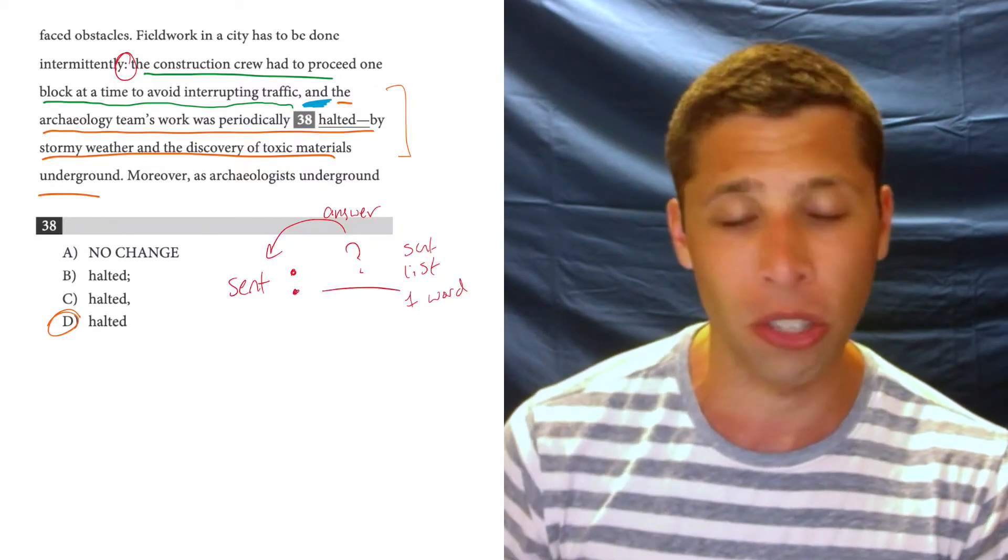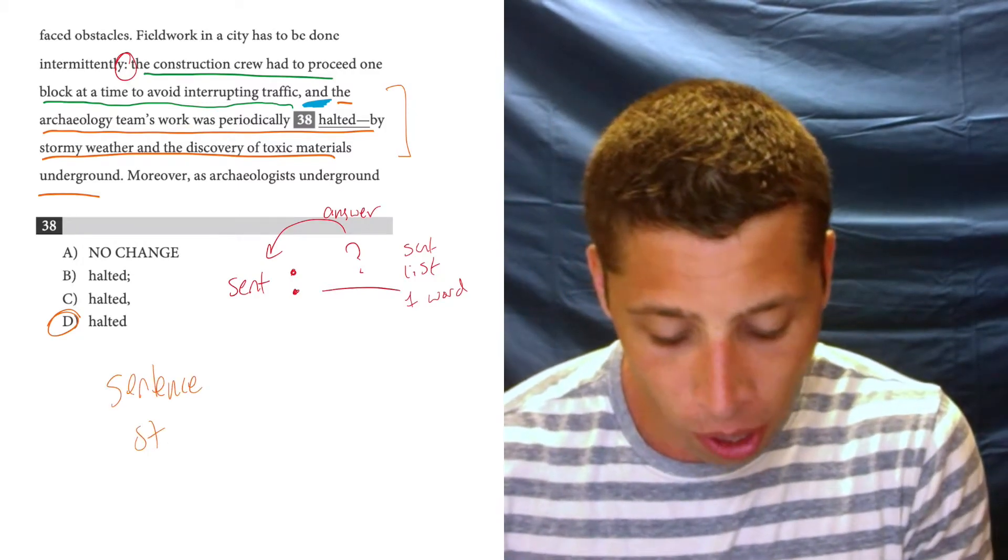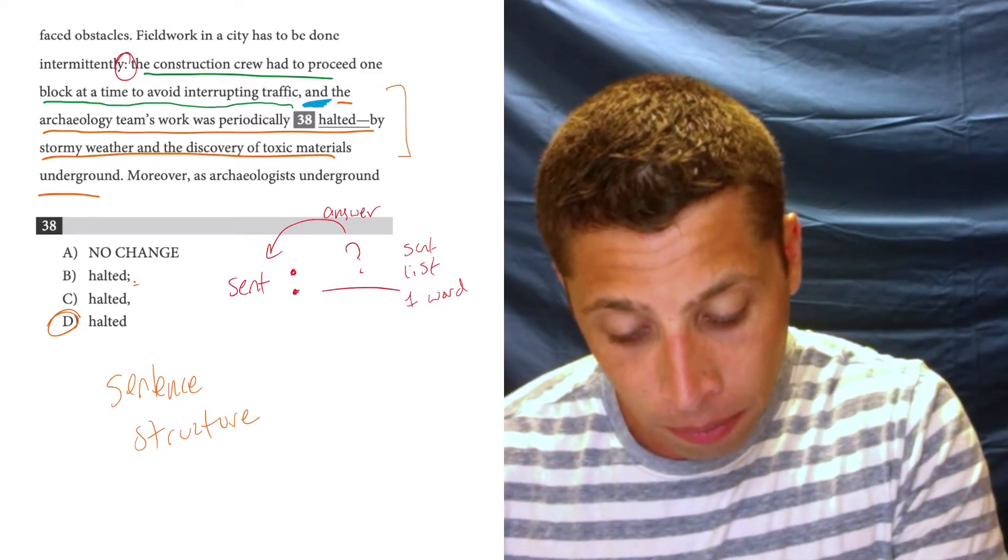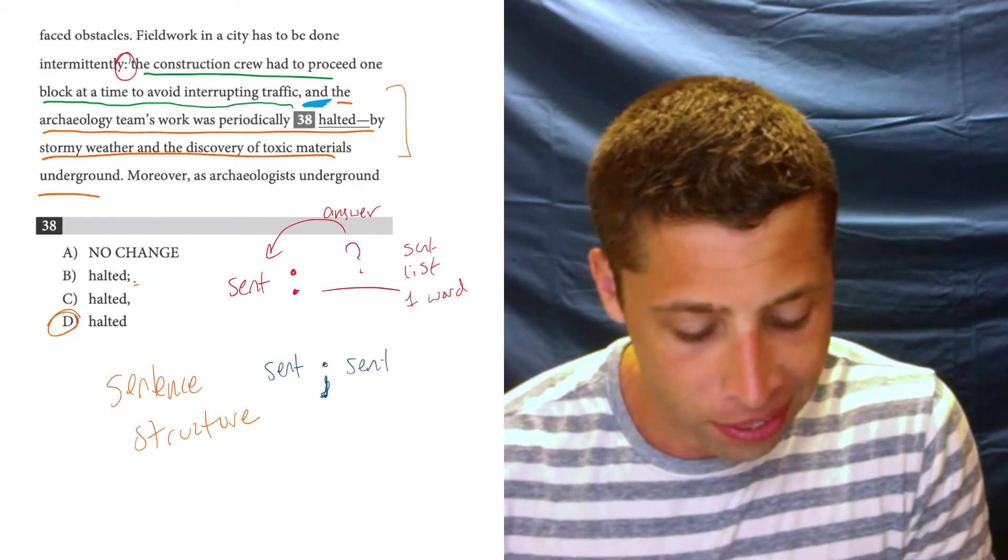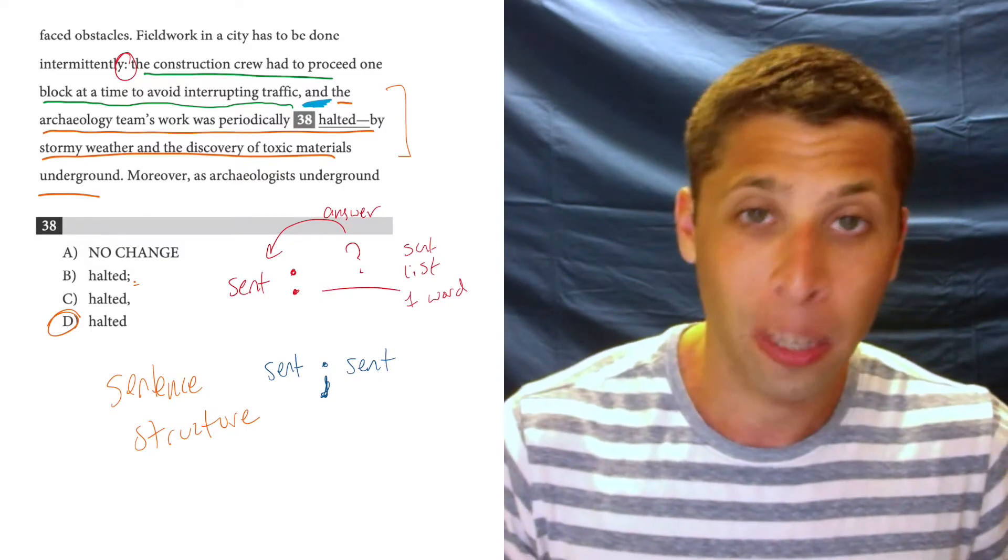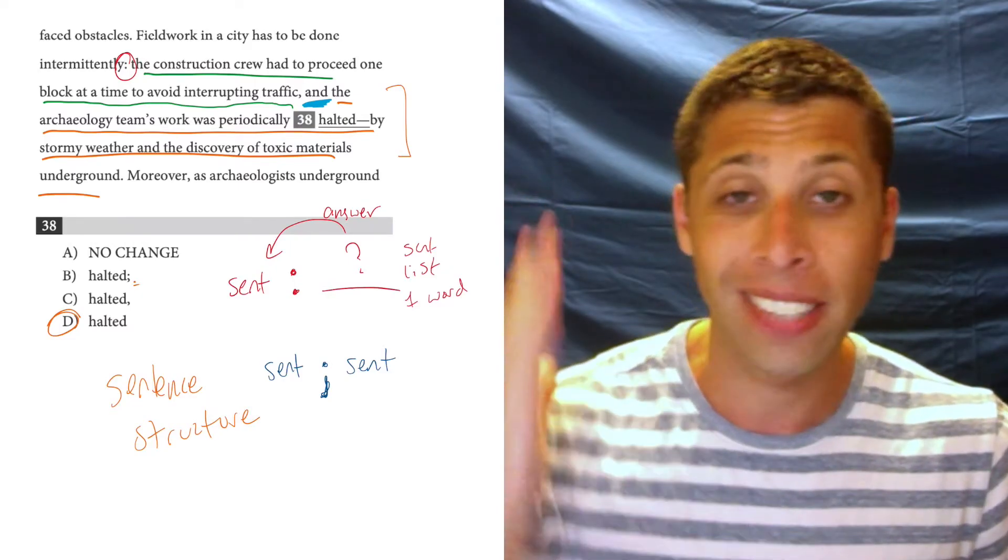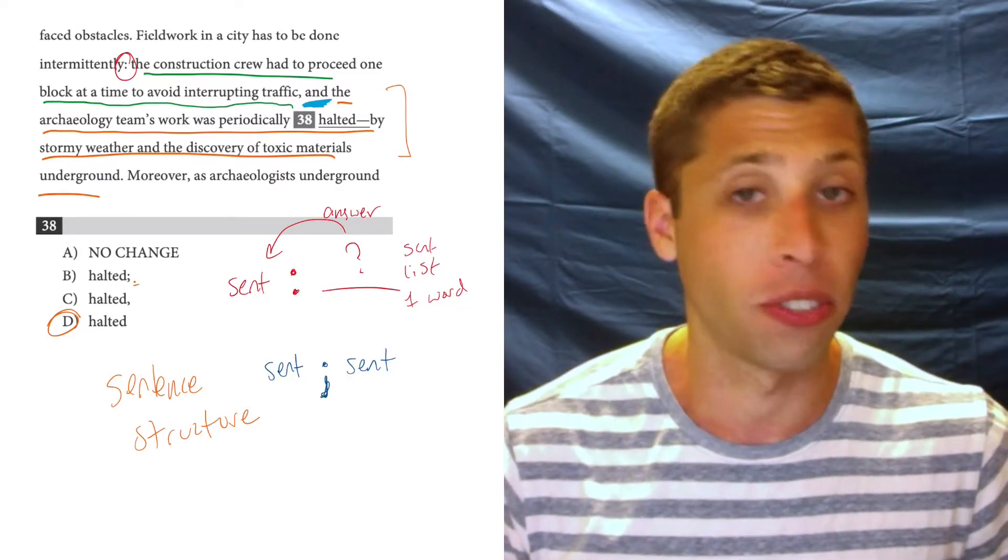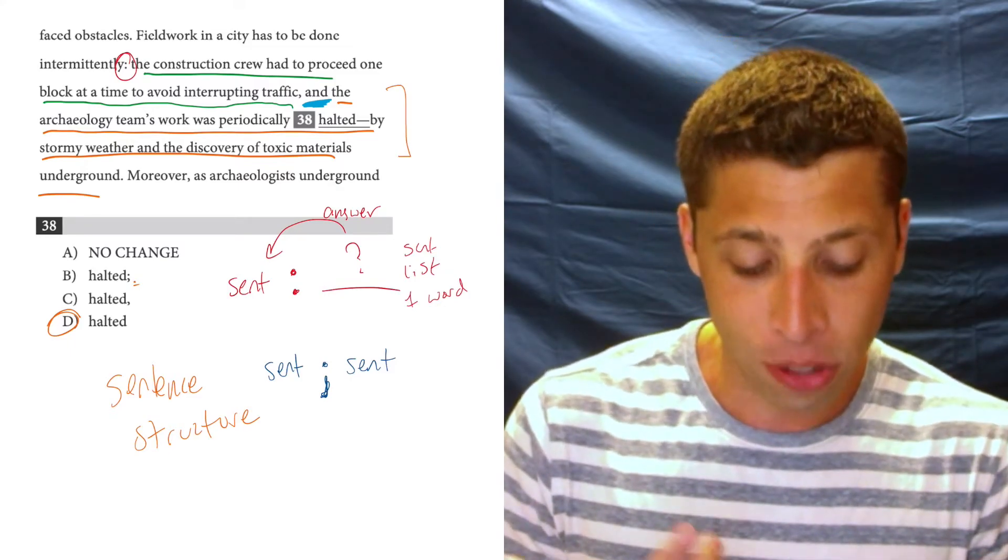But why is there really a pause? Well that's because a punctuation mark normally is meant to show us sentence structure. And a semicolon in particular, a semicolon only works if we have a complete sentence before and after the semicolon. And as we can see here, there's not really a complete sentence after. The archaeology team's work was periodically halted. That's a sentence. I could end that with a period. By stormy weather and the discovery of toxic materials underground. That is not a sentence. That's just a clause. And so that doesn't work.